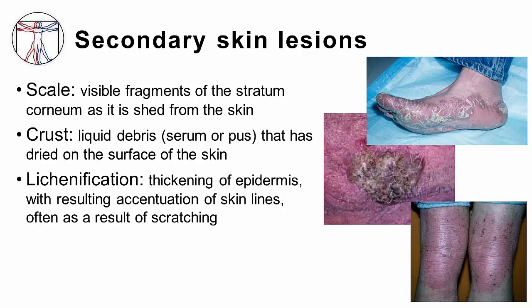Crusting is the result of the drying of liquid debris, such as plasma or pus, onto the surrounding skin. It may form after the rupture of vesicles or pustules. One example is the honey-colored crusts associated with impetigo, a bacterial skin condition that we will discuss in upcoming modules.